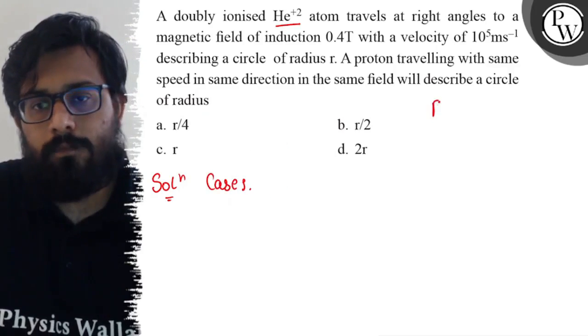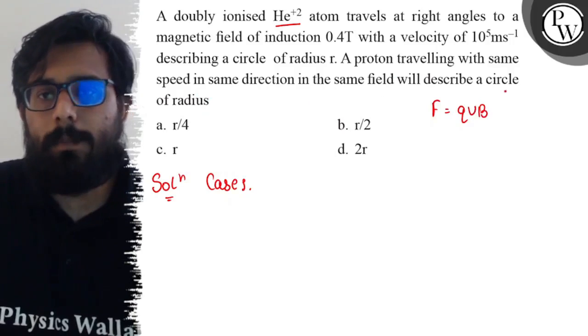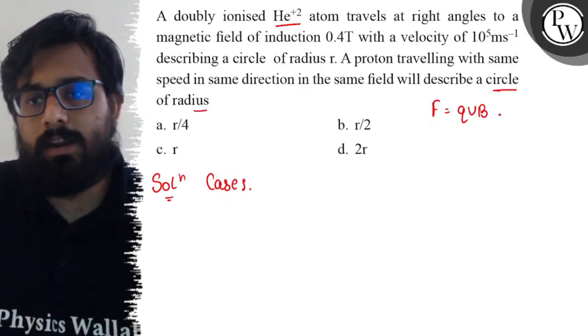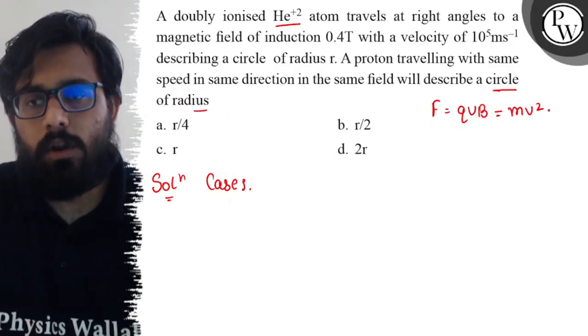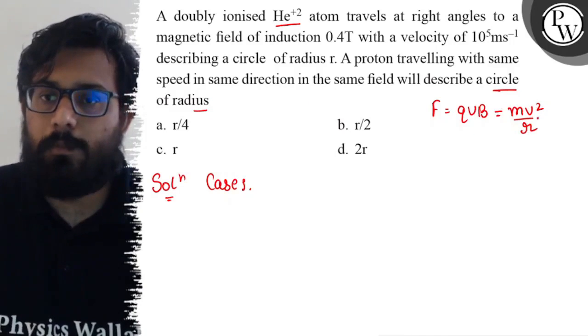When a particle follows a circular path, another force called centripetal force will act on it. So qvB equals mv²/r because the magnetic force balances the centripetal force. From here, r can be written as mv/qB.